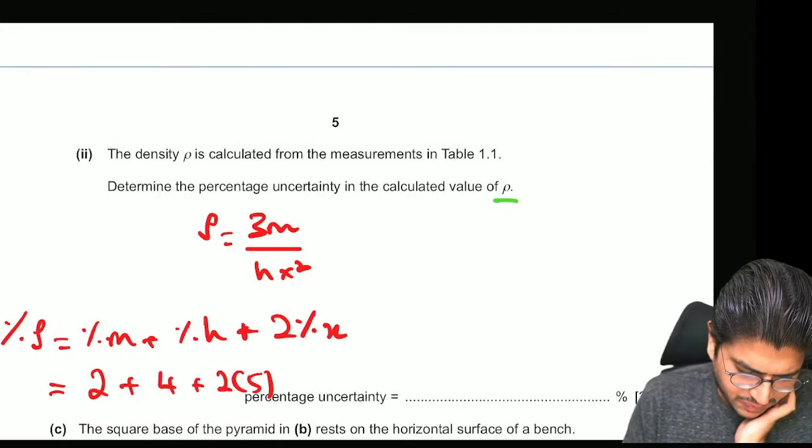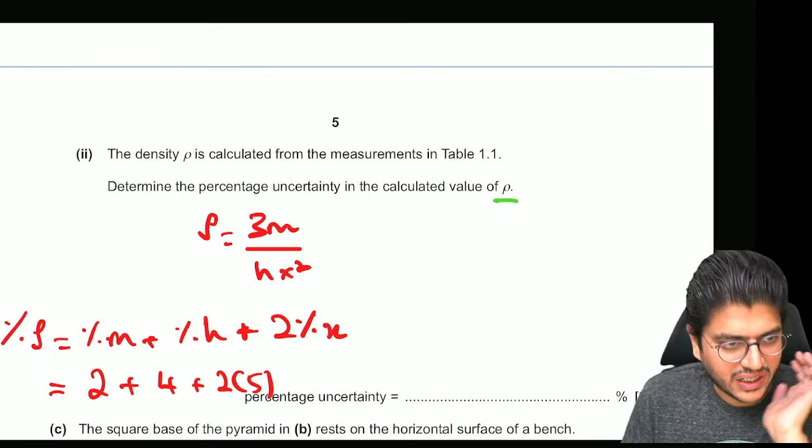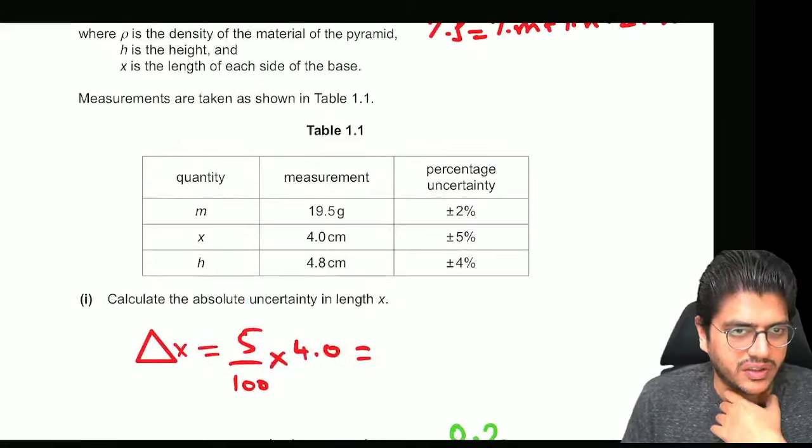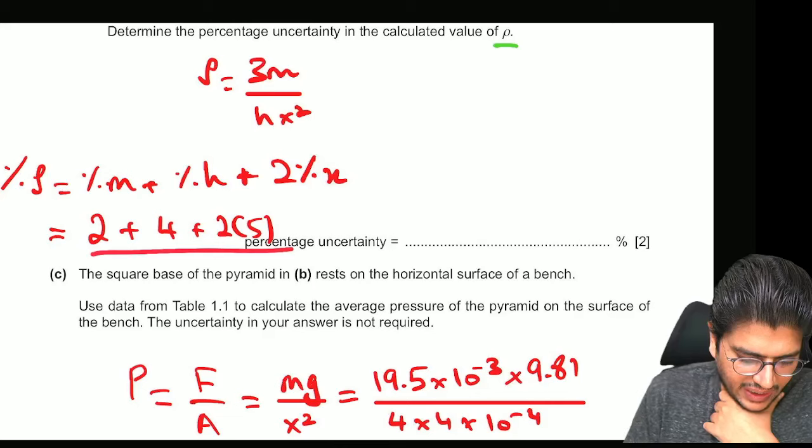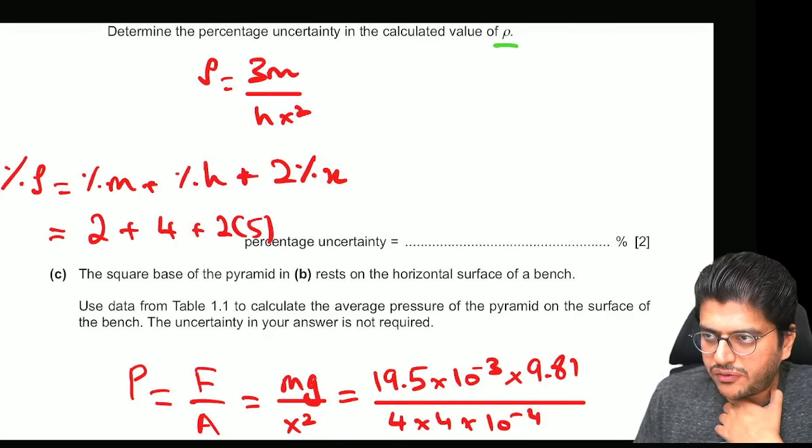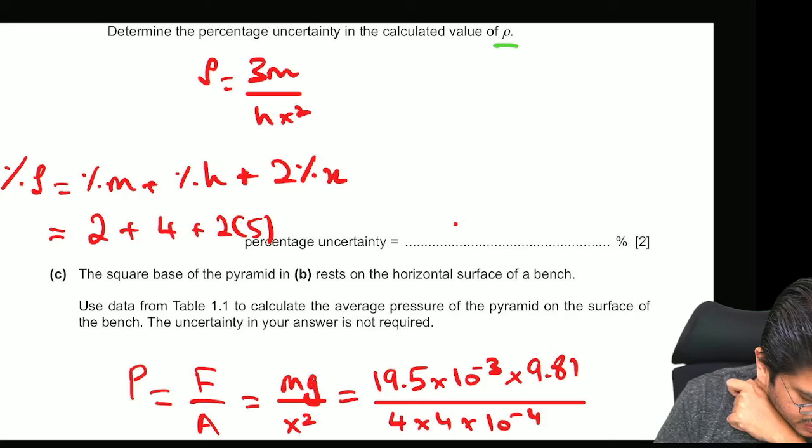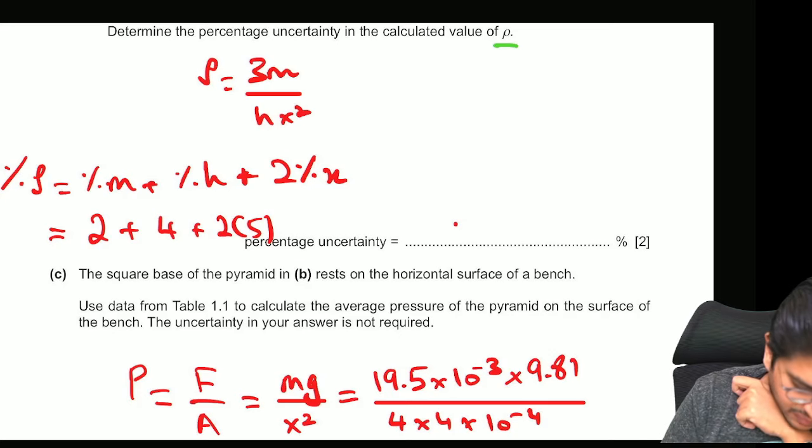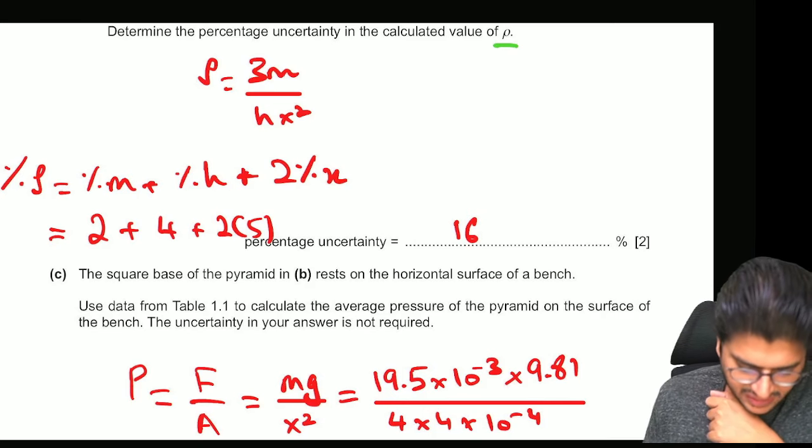So percentage M plus percentage H plus 2 percentage X. And they had already given you the values over here in the table which you can see. So you can plug them here. And the answer that you get from here should be 6 plus 10, 16%.